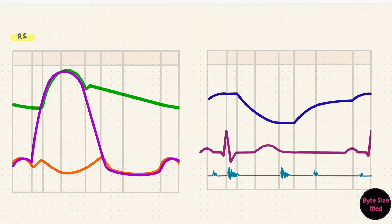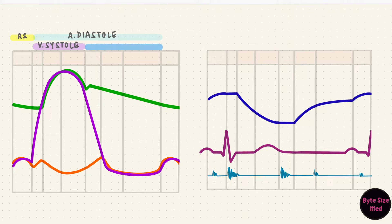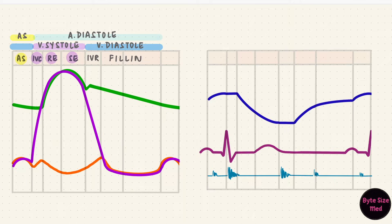If we start with atrial systole, that lasts a short duration, so the rest of the cycle is in atrial diastole. Ventricular systole starts after atrial systole and it's longer — it overlaps with atrial diastole. Ventricular systole is followed by ventricular diastole, which completes the cycle. The ventricular events can be divided: after atrial systole, there's isovolumetric contraction in the ventricles, then the ejection phase, which has rapid ejection first and then slow ejection. Those are the three parts of ventricular systole. Ventricular diastole has isovolumetric relaxation, then the filling phase — first rapid filling, then slow filling. Usually we end the picture with another atrial systole, because the cycle is going to repeat again, overlapping with ventricular diastole.